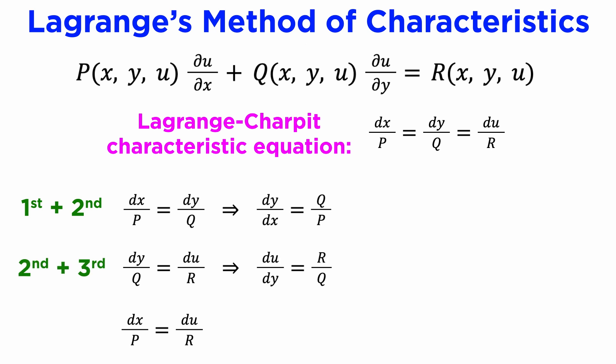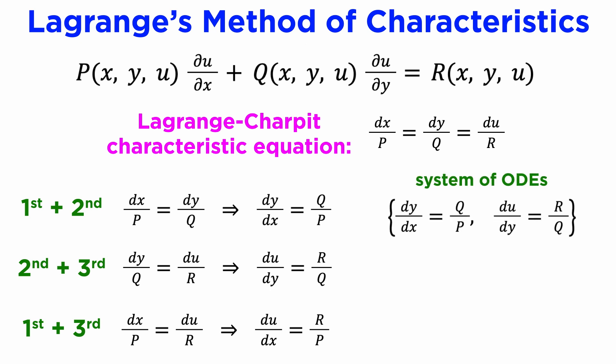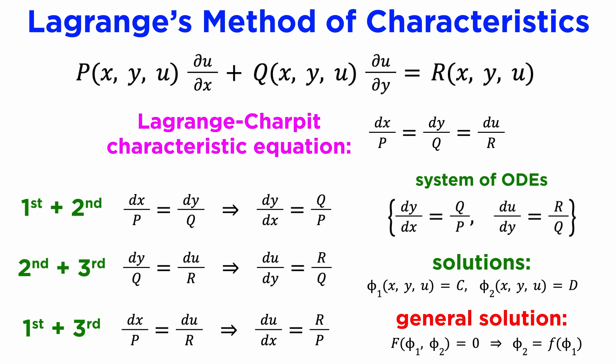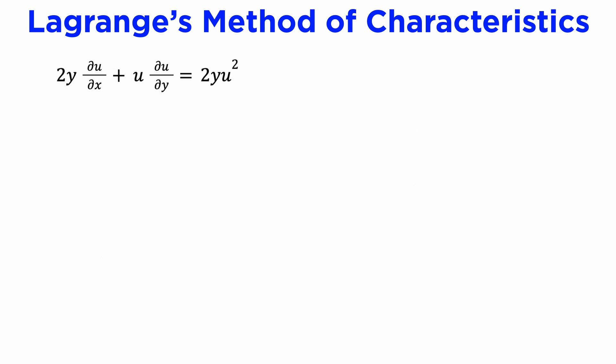From the second and third we get another equation, and from the first and third we get yet another. Out of these three differential equations, which are all ODEs, we can pick any two of them to form a system of ordinary differential equations. If we are able to solve our system, we will get two characteristic curves — call them φ₁ and φ₂ — which are generally implicit solutions equal to a single constant of integration. Our general solution is then any function F(φ₁, φ₂) equals zero, which we can rewrite generally as φ₂ equals some function f of φ₁.